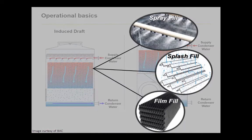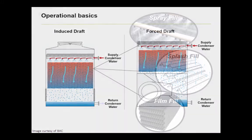There are several common types of fill as you can see: spray, splash, and film. Second, and in parallel, air is being pulled — as with an induced draft tower — or pushed with a forced draft tower via a fan-motor combination across the fill. After the air and water interact, the now warmer, more humid air is rejected out of the cooling tower to the atmosphere, and the resulting cooler water collects at the bottom of the cooling tower before it's sent back to the building.